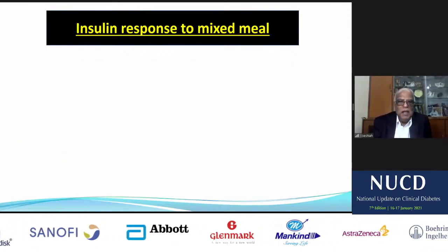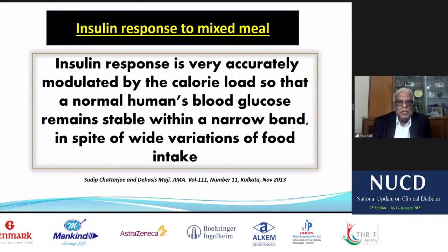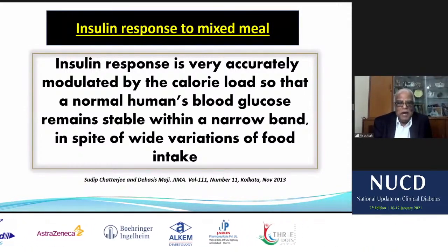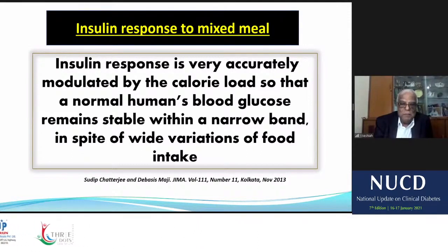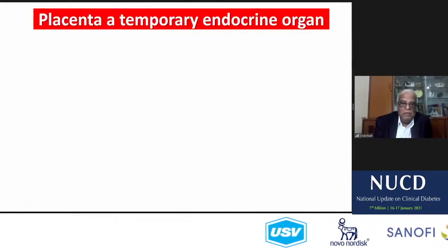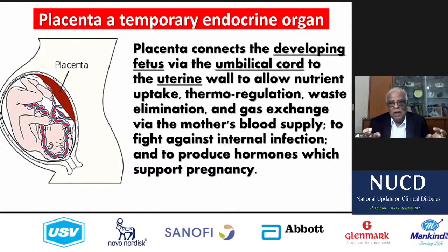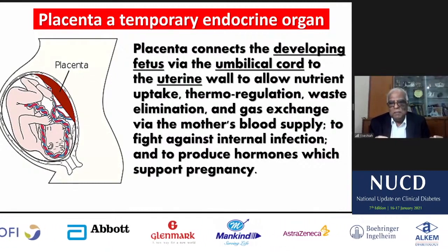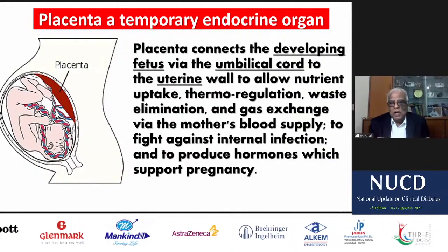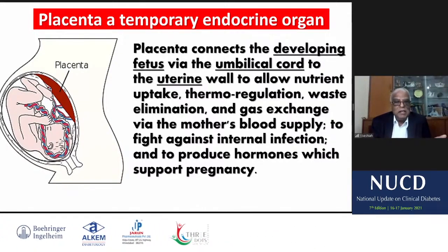The insulin response in the mixed meal is very accurately modulated by the caloric load, so that normal human blood glucose remains stable within a narrow band in spite of wide variations in food intake. Now, the placenta is a temporary endocrine organ — it is very, very vital. It connects the developing fetus via the umbilical cord to the uterine wall to allow nutrient uptake, thermoregulation, waste elimination, and gas exchange by the mother's blood supply, and to produce hormones that support pregnancy.